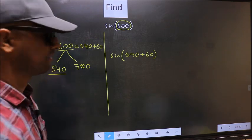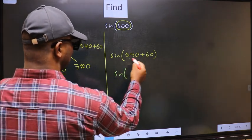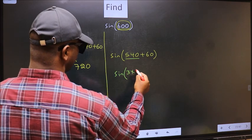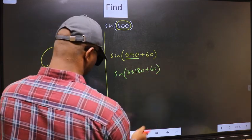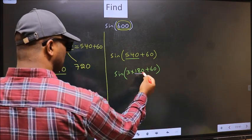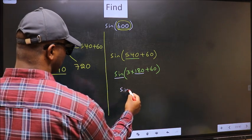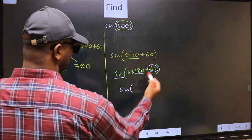Next, sine in place of 540, now we should write 3 times 180 plus 60. Here we have 180, so sine is not going to change. It will remain sine. And inside, we get this angle 60.